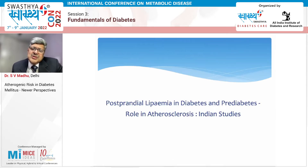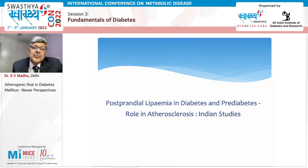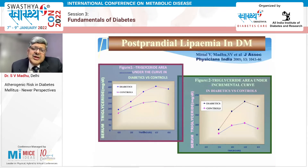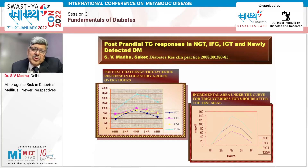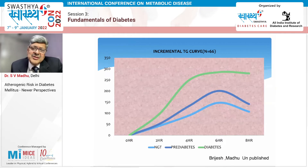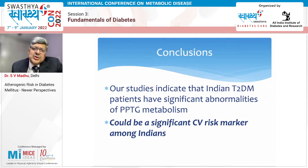As TG levels increase, LDL particle size decreases. The driver is hepatic fat and triglycerides. Looking at postprandial lipemia from our studies: triglycerides, while important, have not been consistently associated with cardiovascular risk. But once you look at postprandial triglycerides, it becomes far more important than even HDL. Indian diabetics show significant postprandial triglycerides, also seen in pre-diabetic states like pure IFG, pure IGT, and newly detected diabetics — with a graded increase from NGT through pre-diabetes to diabetes.